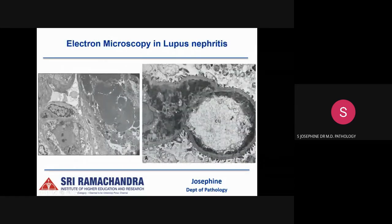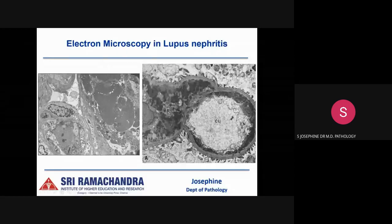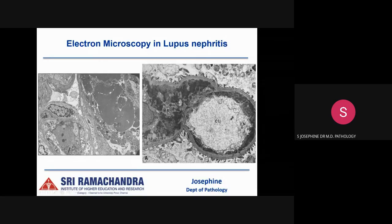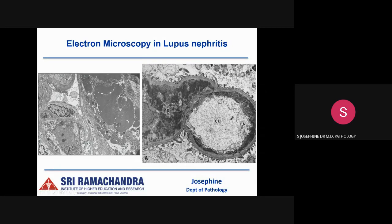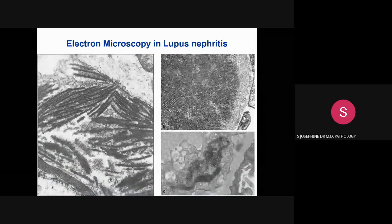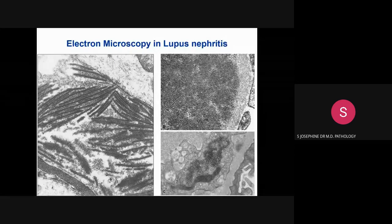Regarding common electron microscopy findings in lupus nephritis: the capillary lumen may be obliterated by a massive electron dense deposit representing the hyaline thrombus. We also see tubular reticular inclusions — inter-anastomosing tubular structures seen in the dilated cisternae of the endoplasmic reticulum, more commonly in endothelial cells. These are intracellular inclusions characteristic of lupus nephritis. The deposits may also show an organized substructure of fibrillar arrays or fingerprint-pattern arrays at the ultrastructural level.